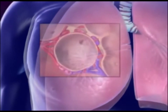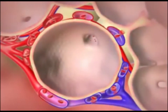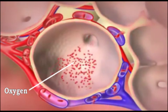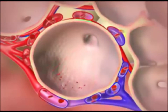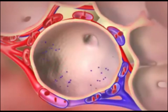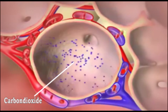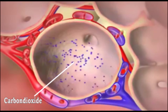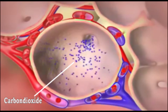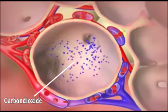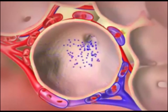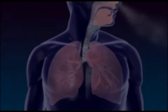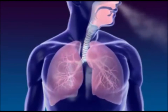When we breathe in, high concentrations of oxygen diffuse from the lungs into the blood. As a result of respiration, carbon dioxide is produced. This increases the concentration of carbon dioxide in the cell more than the surrounding blood. Therefore, carbon dioxide diffuses out through the cell membrane into the blood, and is finally exhaled from the body.